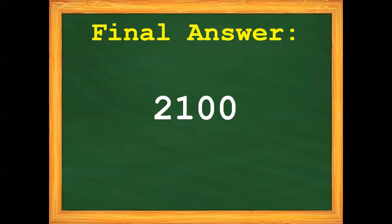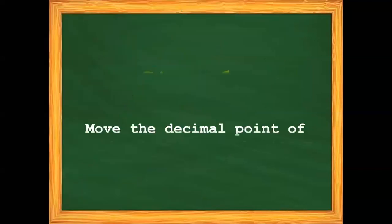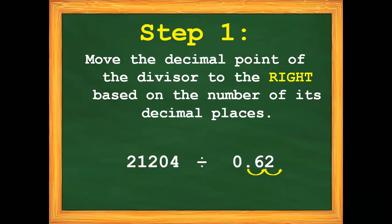Let's proceed to example number 3: 21,204 divided by 62 hundredths. Step 1: Move the decimal point of the divisor to the right based on the number of its decimal places. We have 2 decimal places in 62 hundredths, so we move 2 times. So we have now 21,204 divided by 62.